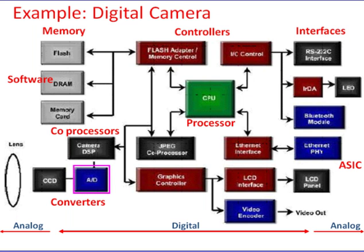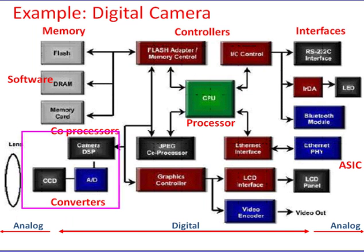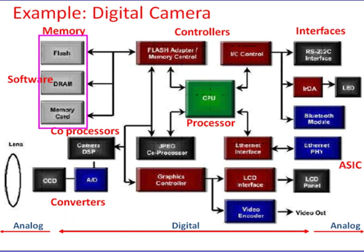The image is then converted to digital form for processing. Digital components include processors, coprocessors, memories, controllers, and buses such as ASICs (application-specific integrated circuits) — chips designed for a specific application. Converters are used: analog-to-digital and digital-to-analog. The analog-to-digital converter converts image data in analog form into digital form for processing. Software application programs are also part of the system.